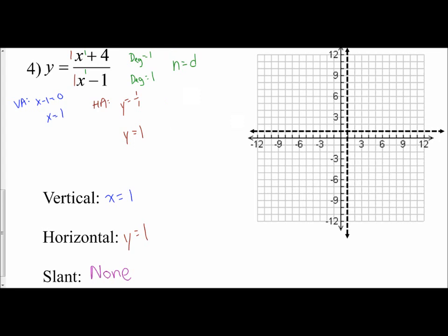Again, I find one important point — the y-intercept — by setting x equal to 0. So y equals 0 plus 4, which is 4, over 0 minus 1, which is negative 1. Four over negative 1 is negative 4. So I have a y-intercept at negative 4.